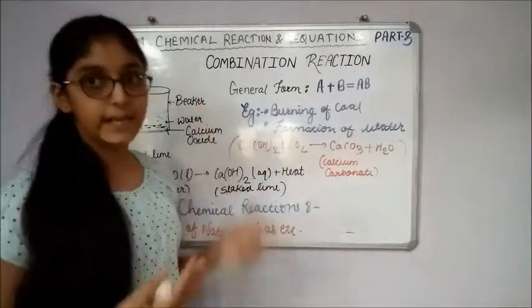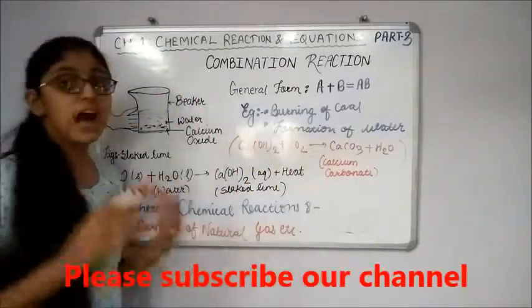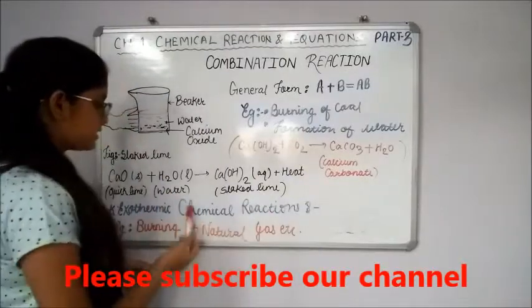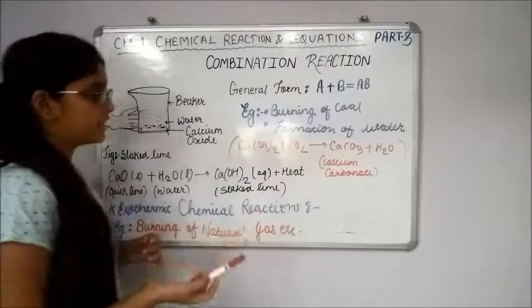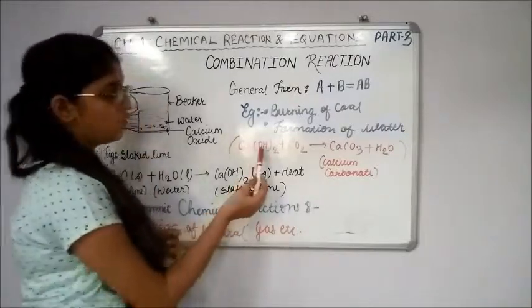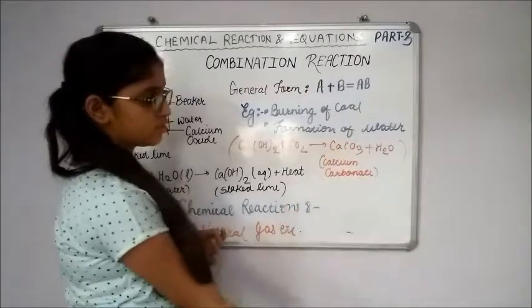Now examples for combination reactions are burning of coal, formation of water, etc. Now if you know that this slaked lime is also used for whitewashing in our homes.